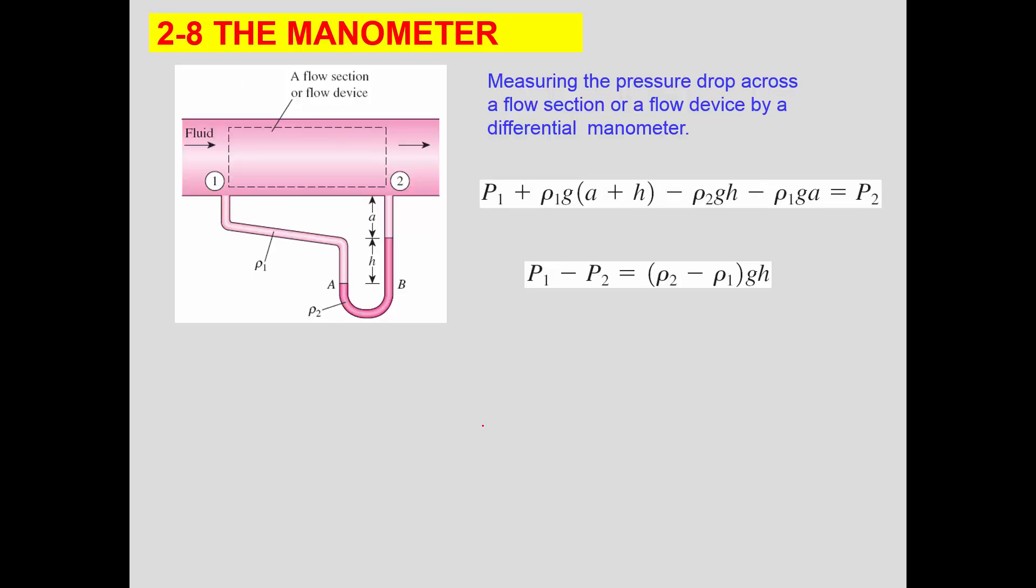The manometer is also used to measure pressures across the flow section. And that comes from the differential manometer. So in this case, from point one to point two, what you have is differences in elevation. You have A and H. You look for those differences. And then you have, in this case, liquid one and liquid two, which we usually use mercury. So the expression then it's P1 plus the density one times g times A plus H. In this case, we went from P1 and went all the way here.